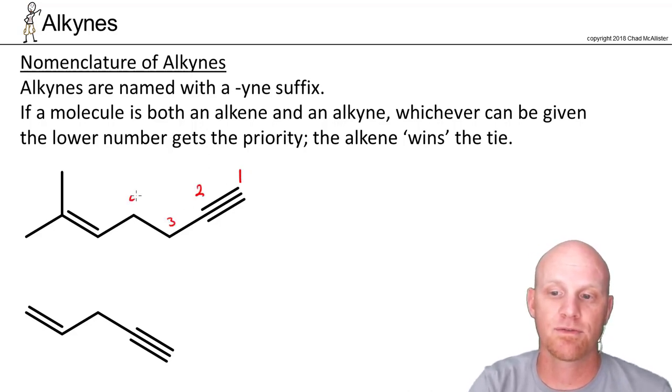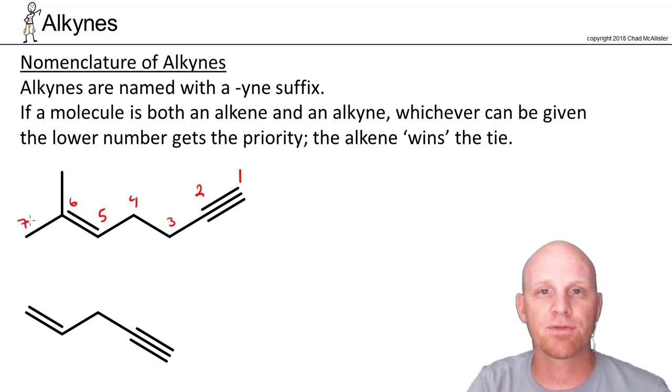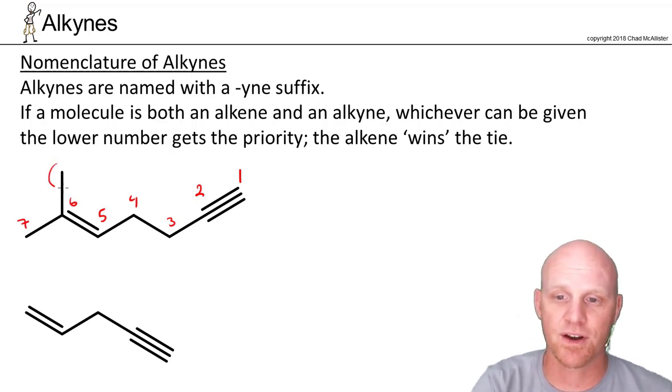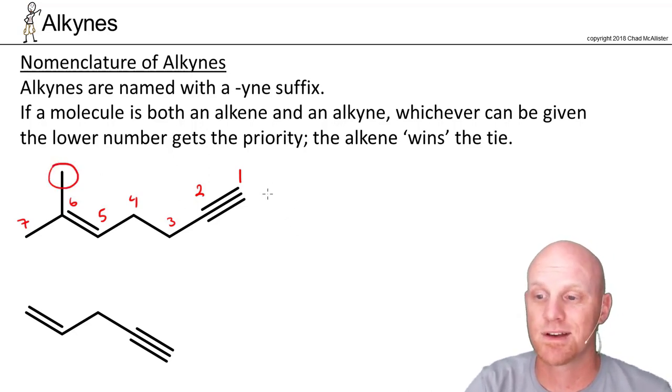So 1, 2, 3, 4, 5, 6, 7. There's no special priority for either of them. It's just whichever one you can get the lower number, that's going to be the winner. In this case, we do have a substituent here at carbon-6. We always start with the substituents, so we'll say 6-methyl.